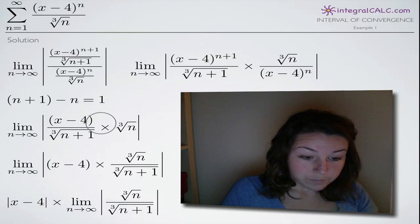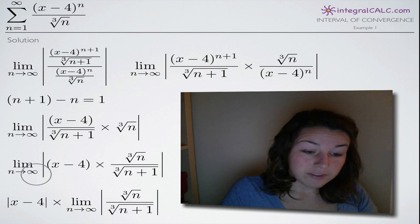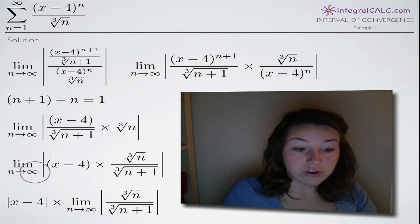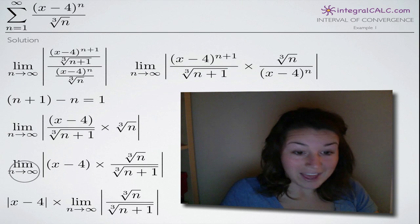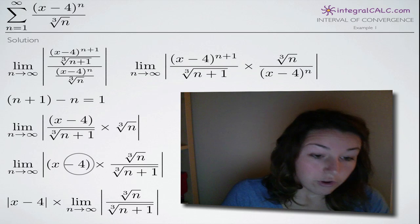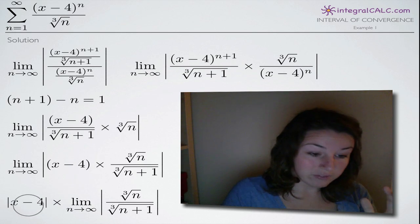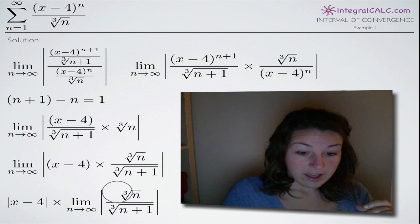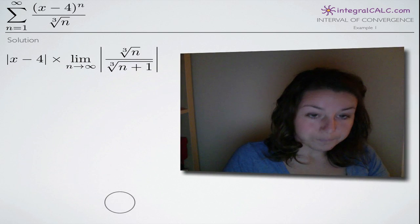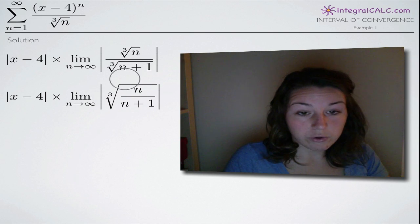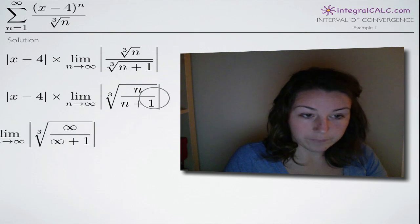We remove (x minus 4) completely from the absolute value brackets. Since we're taking the limit as n goes to infinity, we only care about n's, so we leave the n's inside and move (x minus 4) outside — keeping the absolute value on it. Then, since both the numerator and denominator inside are cube roots, we take the cube root of the numerator divided by the denominator as a quick simplification step.